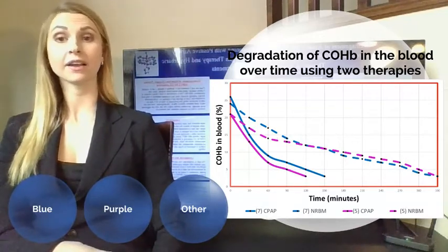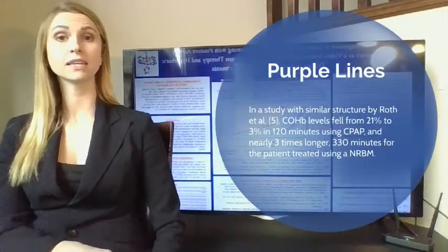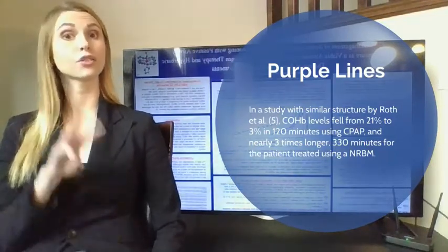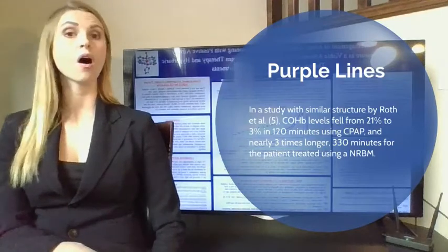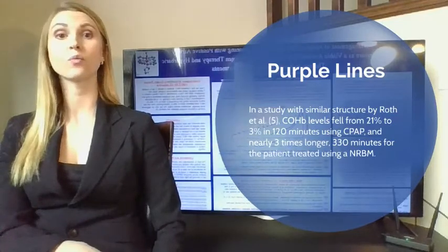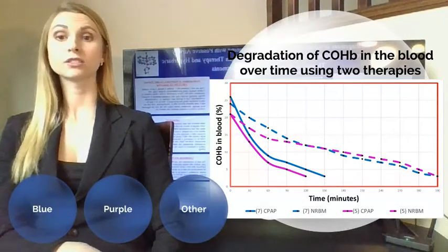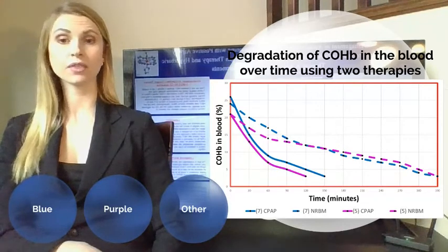Looking at the graph, the solid line represents CPAP and the dashed line represents non-rebreather. Both patients began with a carboxyhemoglobin level around the same percentage; however, the patient receiving CPAP cleared carbon monoxide from the blood much faster. In a study with similar structure by Roth, carboxyhemoglobin levels fell from 21% to 3% in 120 minutes using CPAP and took three times longer — 360 minutes — for the patient treated using non-rebreather. All conditions were kept constant with the only variable being the therapy received, resulting in recovery within one-third of the time using CPAP therapy. Both studies showed very similar results for CPAP and similarly aligned results for non-rebreather therapy.